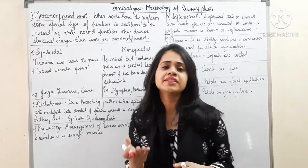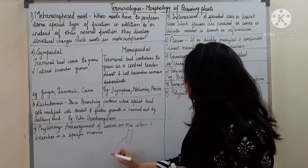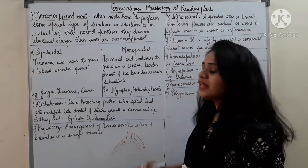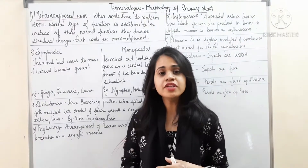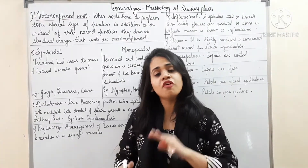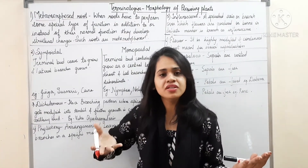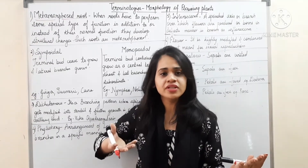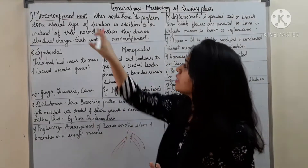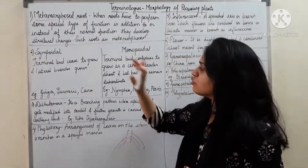For example, you have a prop root. What is a prop root? A prop root provides external support. Then you have storage roots. These storage roots are roots performing a different function other than absorption of water and minerals — they are storing food inside them. Such kinds of roots are called metamorphosed roots.